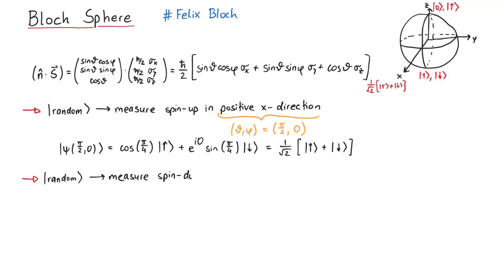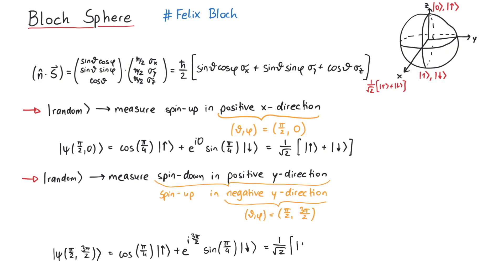Or what if you measure spin-down in the y-direction? This means we need to know the coordinates of the negative y-axis, which points towards the spherical coordinates pi over 2 and 3 pi over 2. This yields 1 over the square root of 2 times up minus i down.